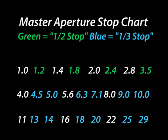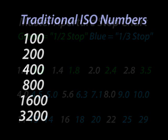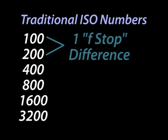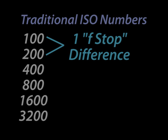The term f-stop is also used to measure the difference between ISO ratings, where every ISO stop is twice as sensitive to light as the last. Many new cameras allow for one-half and one-third stop increment adjustments of the ISO.